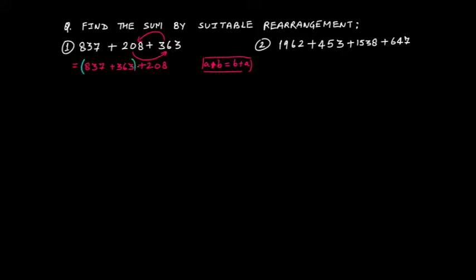Now group together 837 and 363. This is the associative property of whole numbers. The associative property says that (a + b) + c equals a + (b + c) — you can group any two numbers together. So here we have grouped together 837 and 363 using the associative property.